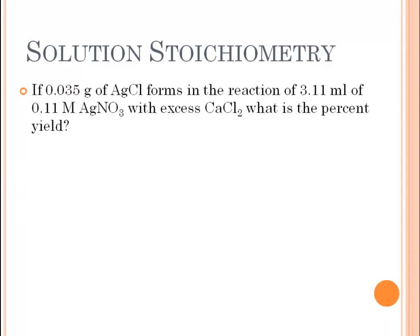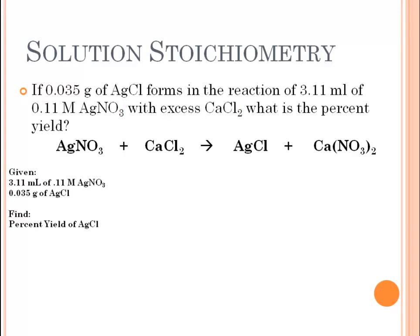Here's another example. If 0.035 grams of silver chloride forms in the reaction of 3.11 milliliters of 0.11 molar silver nitrate with excess calcium chloride, what is the percent yield? We need an equation first. Silver nitrate and calcium chloride undergo a double replacement reaction. One product is silver chloride, as stated in the problem, and the other product is calcium nitrate. Write down your givens: the milliliters and molarity of silver nitrate, and the grams of silver chloride produced. We need to find the percent yield.